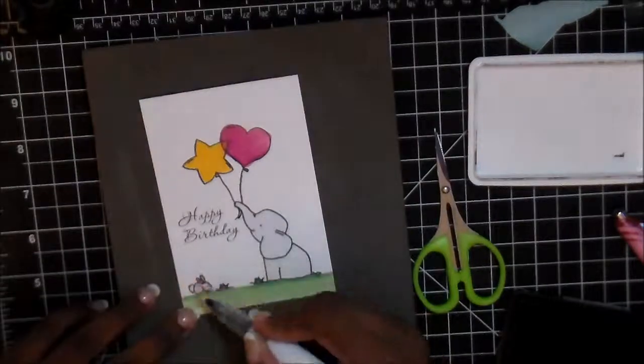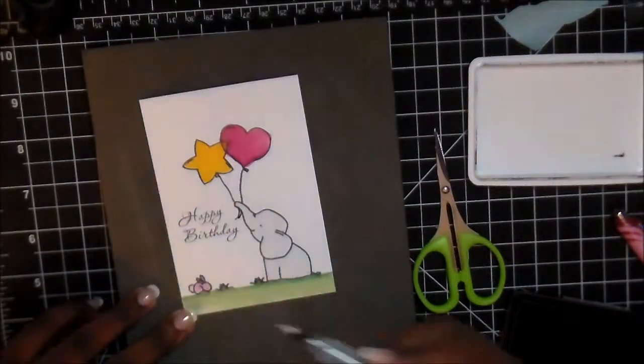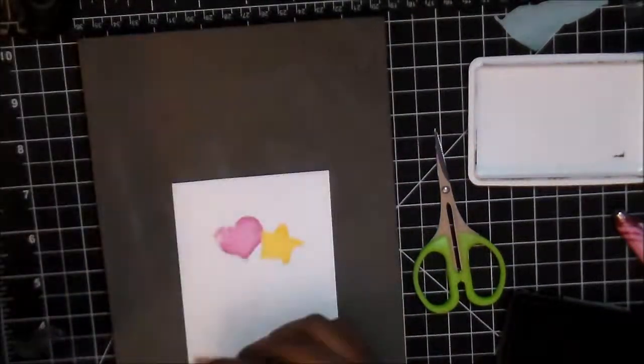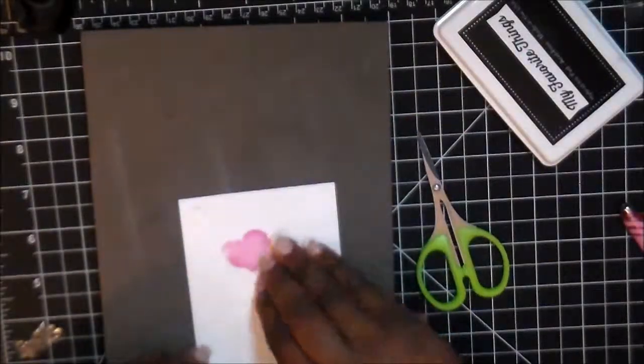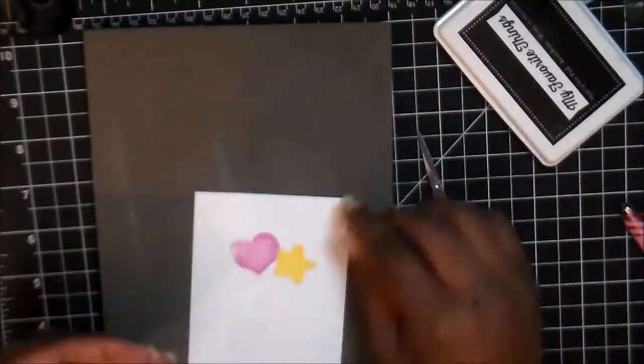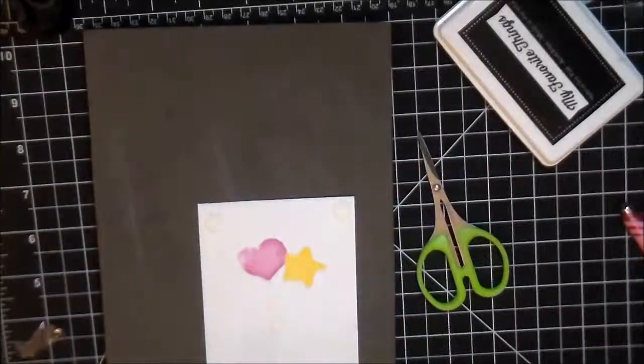Now for the final touches I'm using my Wink of Stella, I'm definitely into the Wink of Stella right now and what I did was on the pink bunny I put Wink of Stella white on the tail and then the regular clear on the pink bunny.